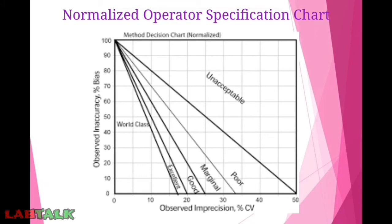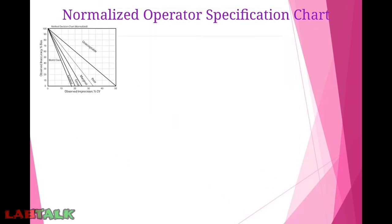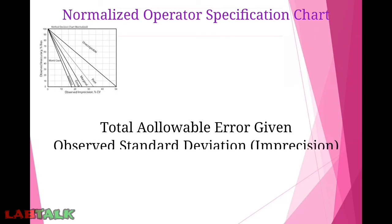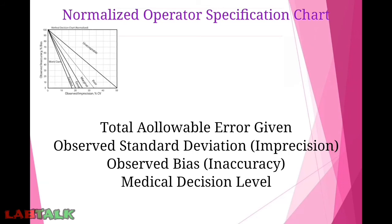The only difference is that the x-axis ranges from 0 to 50 and the y-axis ranges from 0 to 100. The y-axis represents observed inaccuracy (% bias) up to 100%, and the x-axis represents observed imprecision (%) up to 50%. Data required for plotting includes: total allowable error in actual value, observed standard deviation (imprecision) in actual value, observed bias (inaccuracy), and the medical decision limit.